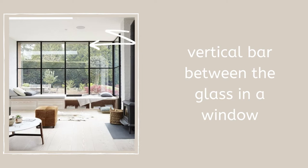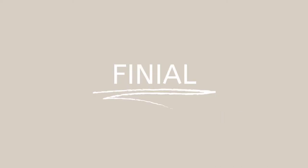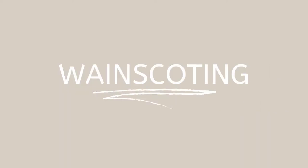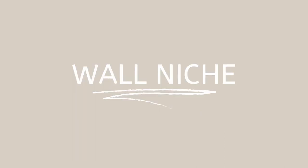If you take a look at the picture and you see those black bars between the glass panels, that is a mullion. A finial is a decorative ornament at the end of the curtain rod — it also helps the curtains from falling out of the curtain rod. Wainscoting is decorative paneling on the lower part of the wall.